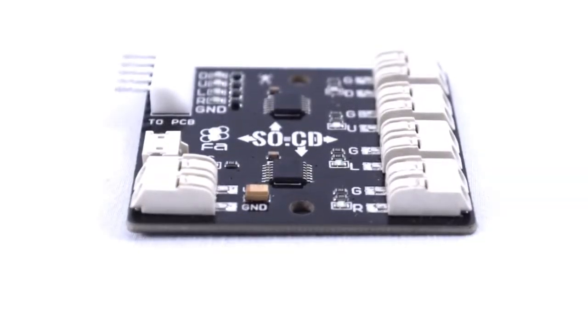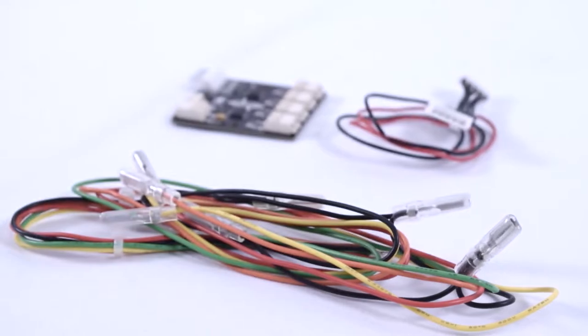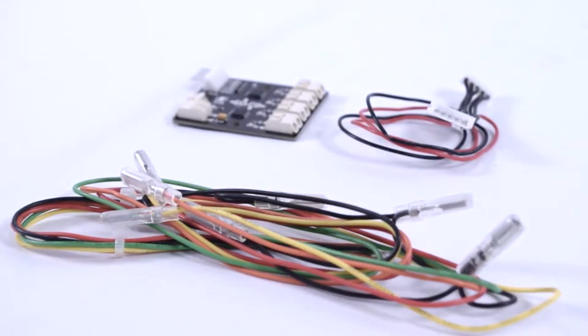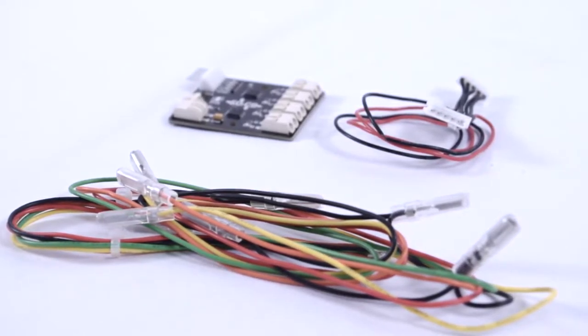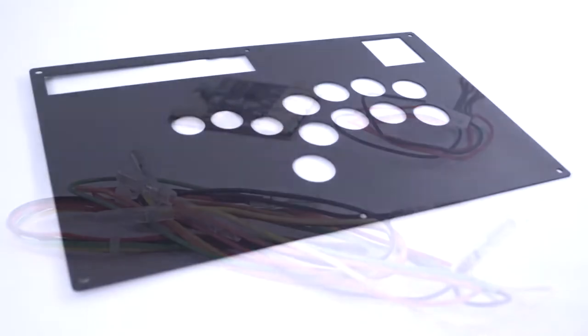Today we'll be going over the hitbox conversion panel for the Hori Rap-N. This conversion kit consists of multiple parts, with the most important part arguably being the new FASOCD or Simultaneous Opposite Cardinal Direction Cleaner PCB. It is also accompanied by the FASOCD hitbox harness and a pass-through harness fashioned for a solder-free and hassle-free experience.